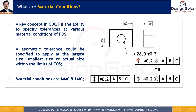In the first condition, a position tolerance is specified at maximum material condition using the M modifier, meaning the tolerance value applies when the hole is produced at MMC. With the L modifier, the tolerance value applies at least material condition. In the third feature control frame, no M or L modifier is present, indicating the geometric control value is applied regardless of feature size.